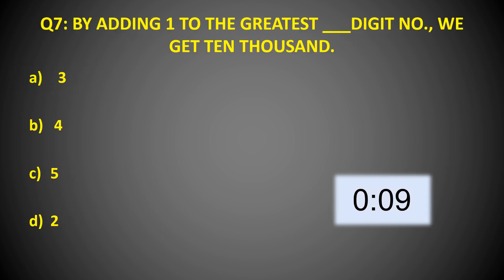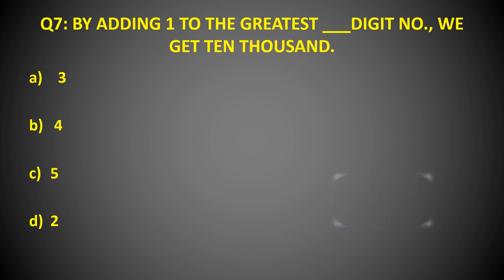Here goes the next question: By adding one to the greatest dash-digit number, we get 10,000. So which is the greatest digit number? And the time is up. The correct answer is Option B: 4. By adding one to the greatest four-digit number, we get 10,000.